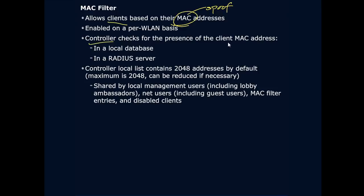Controllers check for the presence of the client MAC address. This is either in a local database — local to your wireless access point or your wireless home router — or most likely in an enterprise environment within your RADIUS server. A RADIUS server is a server that allows for the authentication process, checking whether your device has authentication to meet the requirements to get on a particular wireless LAN. This information is stored either on your wireless access point in a local database or on a RADIUS server. The controller local list contains 2,048 addresses by default, and it can be reduced if necessary.